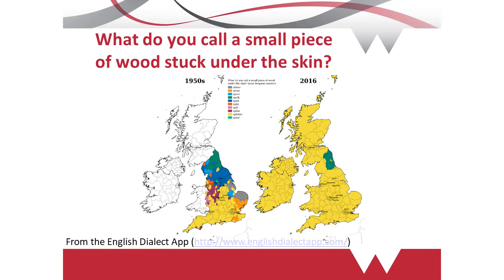You see the most traditional type of implementation of that sort of research here on this slide. A researcher asks an informant: what do you call a small piece of wood stuck under the skin? On the left, you see results from the 1950s where a variety of terms across regions studied under the Survey of English Dialects return results like 'splinter' in the south and 'spelk' in the far north. On the right, you see a more recent implementation by Adrian Lehman and colleagues, where there is now a leveling to the supra-regional term 'splinter,' which has only failed to be replaced in Tyneside and some areas around the Scottish border with 'spelk.'